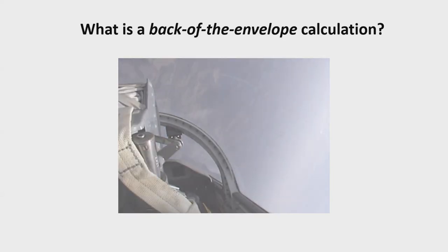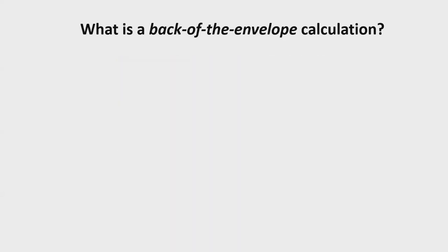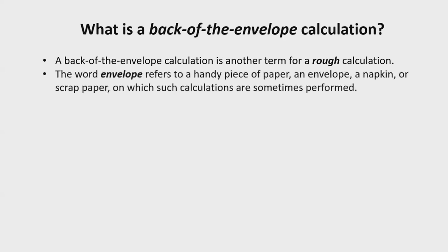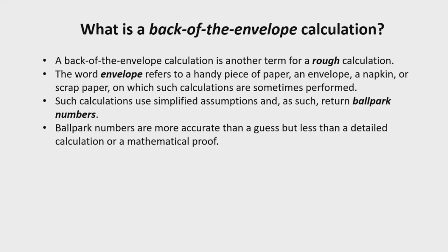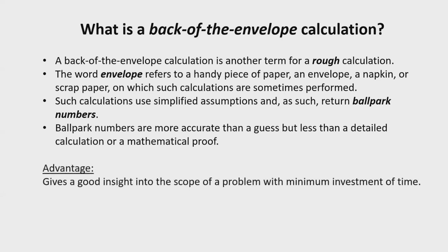Alright, let's address the question: what is a back-of-the-envelope calculation? A back-of-the-envelope calculation is another term for a rough calculation. The word envelope refers to a handy piece of paper, an envelope, a napkin, or scrap paper on which such calculations are sometimes performed. Such calculations use simplified assumptions and as such return ballpark numbers. Ballpark numbers are more accurate than a guess but less than a detailed calculation or a mathematical proof. The advantage of back-of-the-envelope calculations is that they give good insight into the scope of a problem with minimum investment of time. Of course, there is a disadvantage: they only return approximate answers.